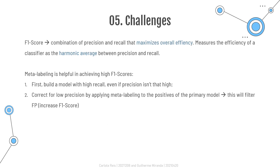One wants to have the highest F1 score possible, and meta-labeling is helpful in that. First, one should build a primary model that achieves high recall, even if precision is not particularly high. Then, the low precision is corrected by applying meta-labeling to the positives predicted by the primary model, which increases the F1 score by filtering out false positives. Basically, the role of the secondary machine learning algorithm is to determine whether a positive from the primary model is true or false — its purpose is not to generate a betting opportunity, but to determine whether one should act or pass on the opportunity presented.